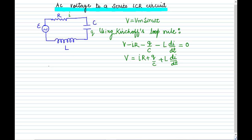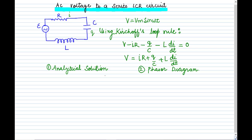We can solve this equation using two methods. The first method is the mathematical or analytical method — the analytical solution. The second is to solve it using the phasor diagram. Whenever in an exam the method is not specified, the phasor diagram method is much easier, so always use it. But if it is specified that you must use the analytical solution, then go for it, as it is somewhat lengthy.